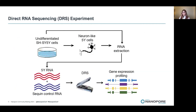Here is an overview of the experiment we performed. Undifferentiated SH-SY5Y cells were cultured and then differentiated into neuron-like cells. RNA was then extracted from the two distinct cell groups and synthetic RNA controls called sequins were added to all the samples. These were all then sequenced on the nanopore MinION device.